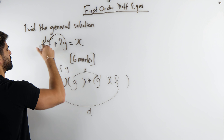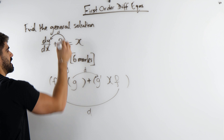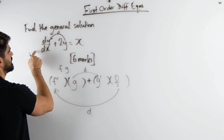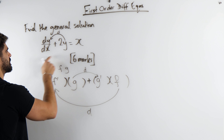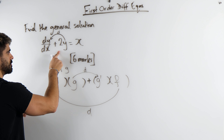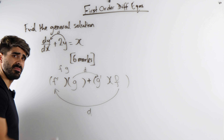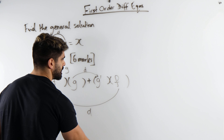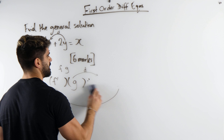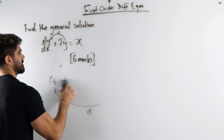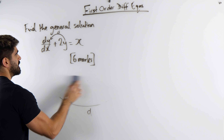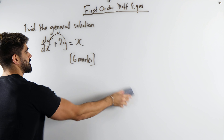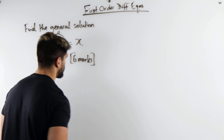So this y differentiates to this — that's my f. But I need to find something that differentiates to 2. There's nothing, and so it's how do we manipulate this so that it does. That's very simple. We have something known as the integrating factor.